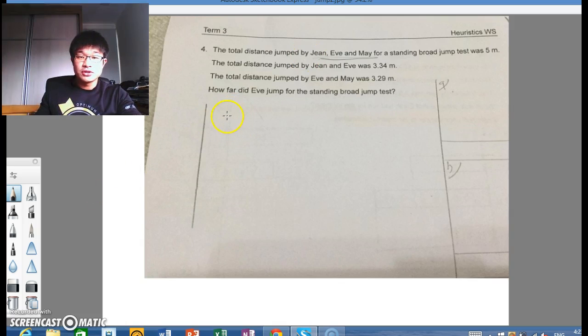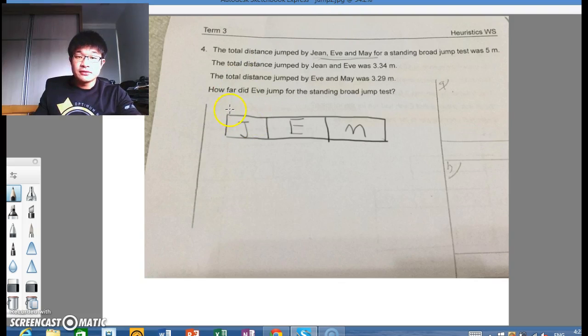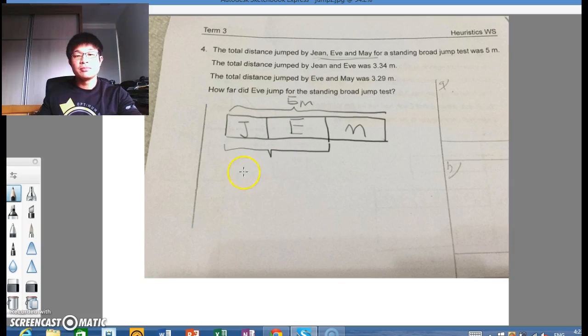So we have a total model, which looks something like this. And in it, we have three characters. Now how big the model is does not matter. Gene, Eve, and May. And the total distance is 5 meters. So here we go. 5 meters. Now, the total distance jumped by Gene and Eve, which happens to be here, is 3.34 meters.